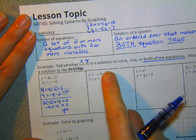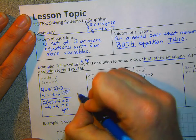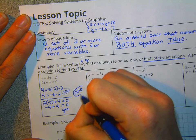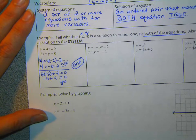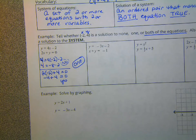So we had to say whether it's a solution to none, one, or both. The answer in this case is it's a solution to one of the equations. If it's a solution to one of the equations, is it a solution to the system? No. It's a solution to the system, okay?